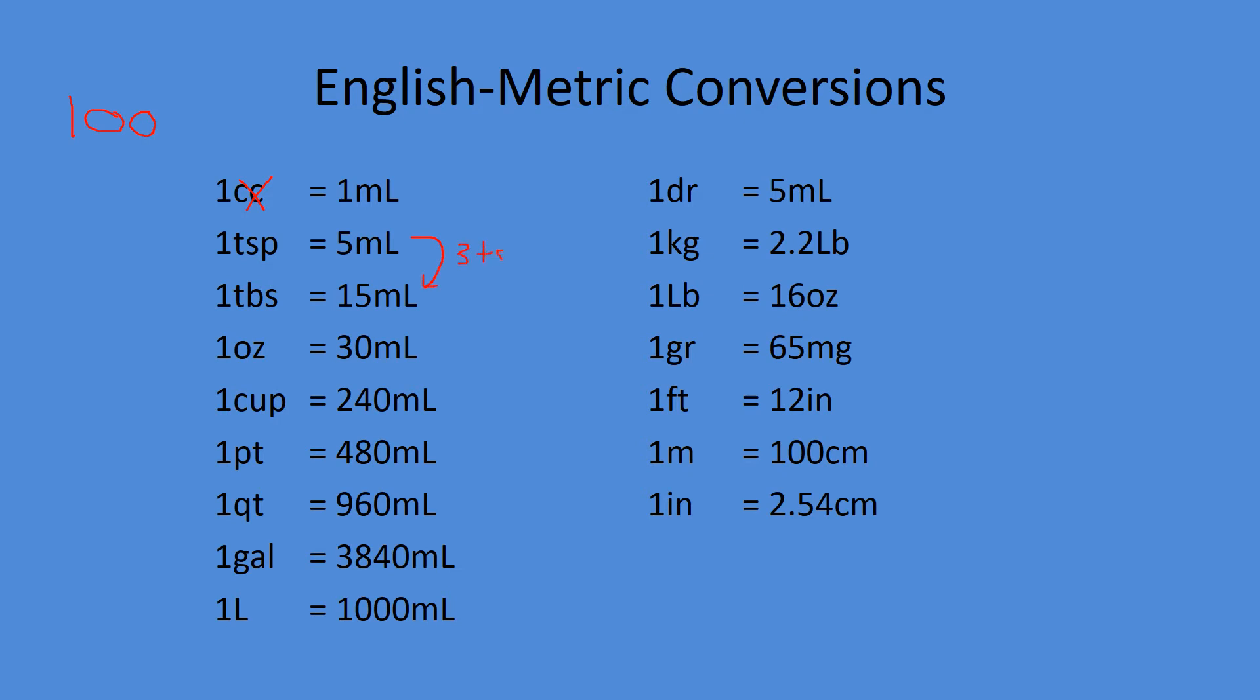If we compare these conversion factors, you'll see that three teaspoons would equal a tablespoon, and two tablespoons would equal an ounce. We have eight ounces in a cup. In a pint there's two cups. In a quart there's two pints. And quarts, or quarters, there's four quarts in a gallon. So maybe those relationships will help you memorize these conversion factors.